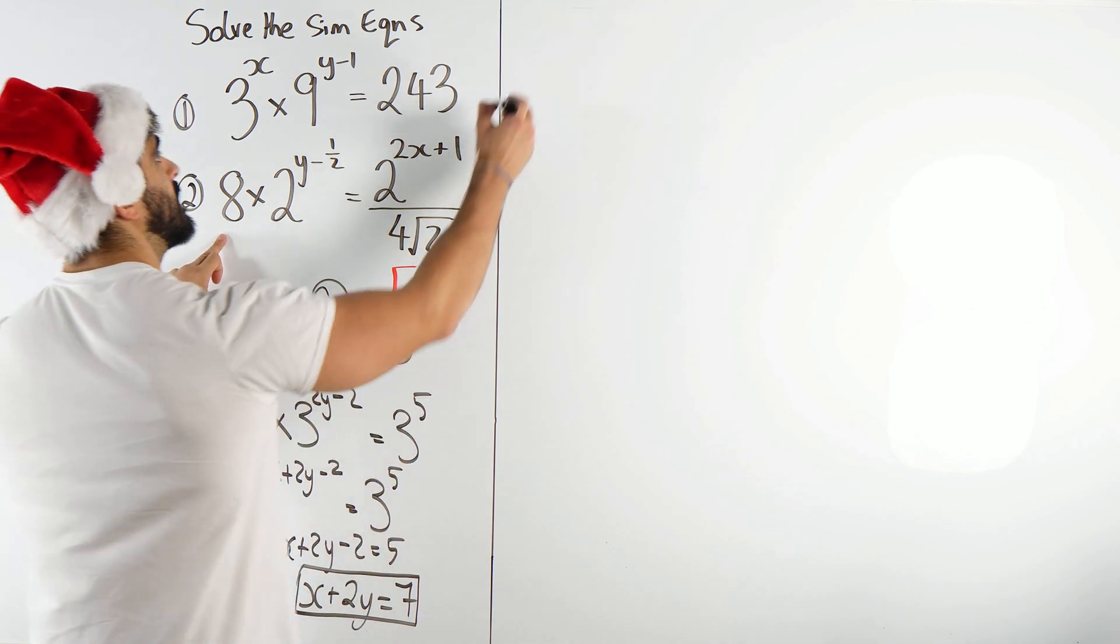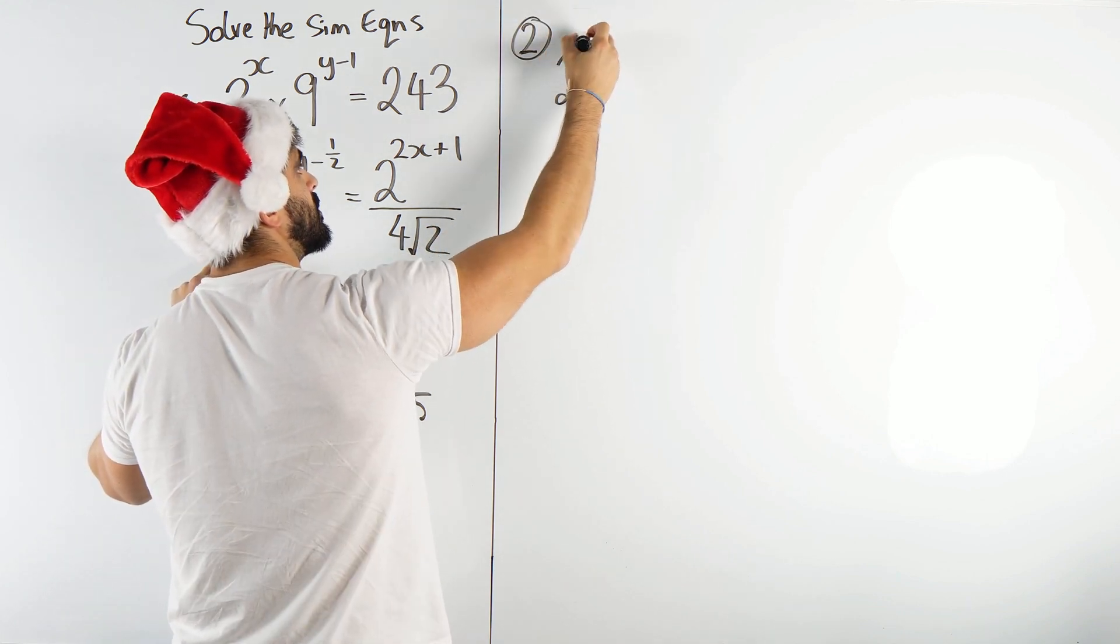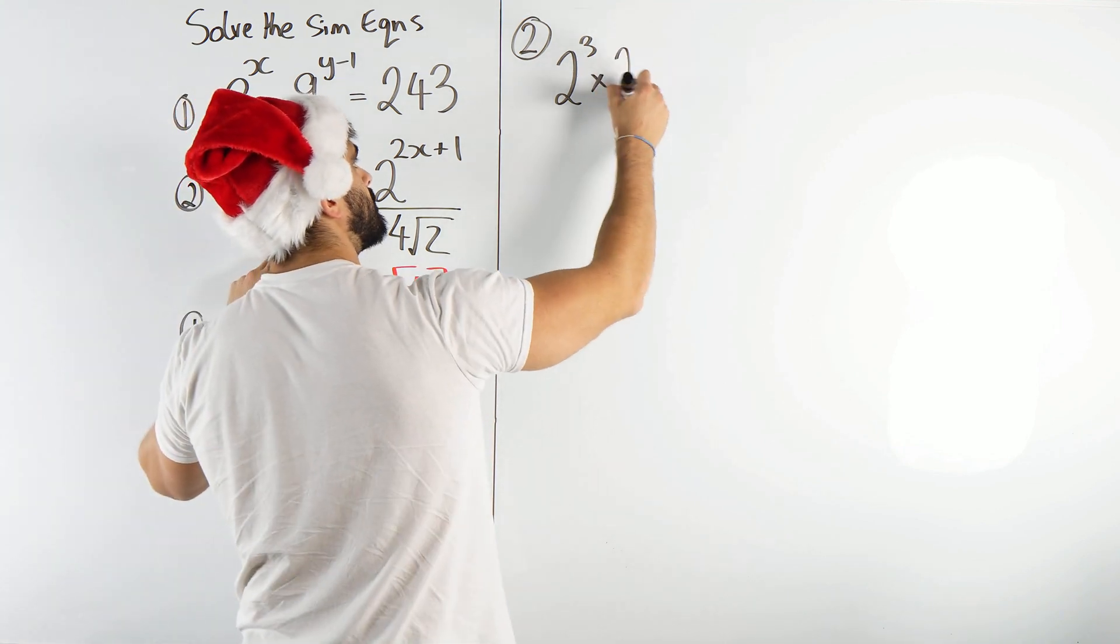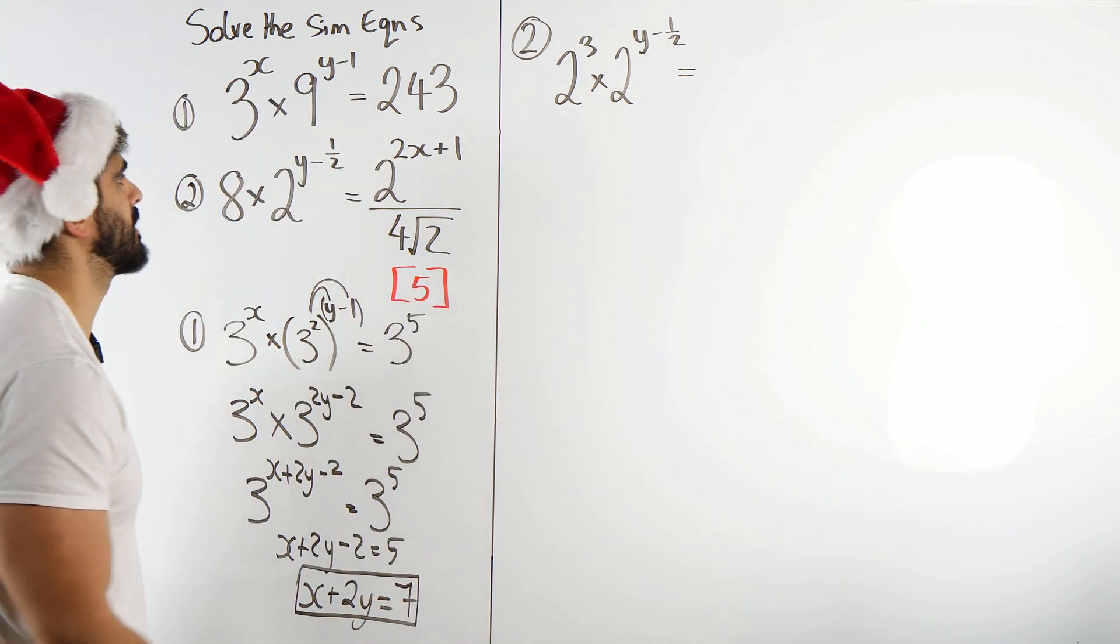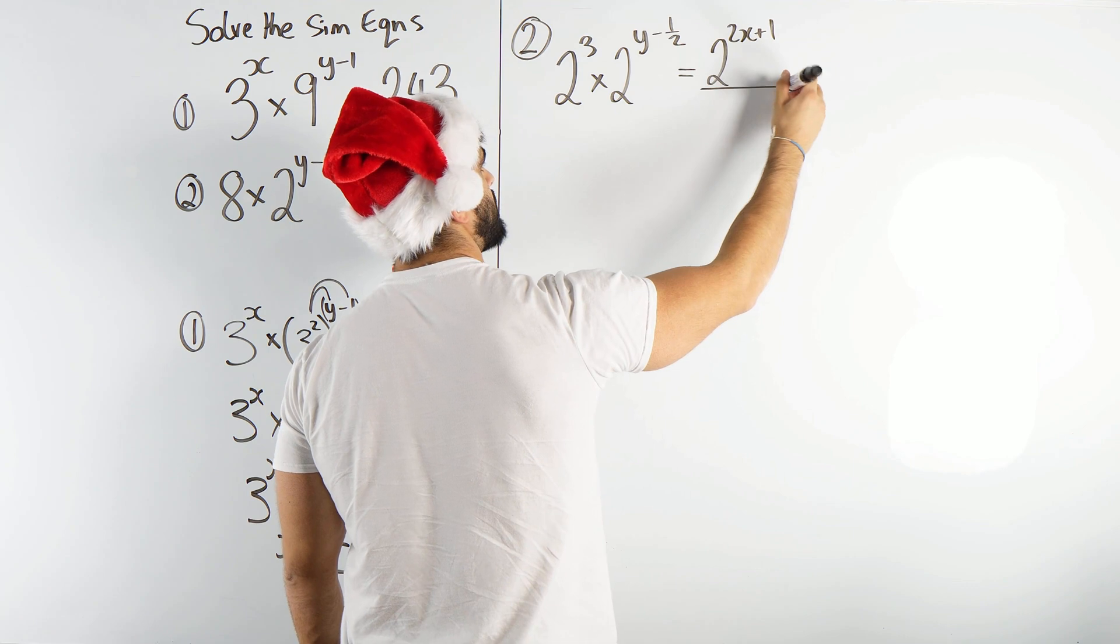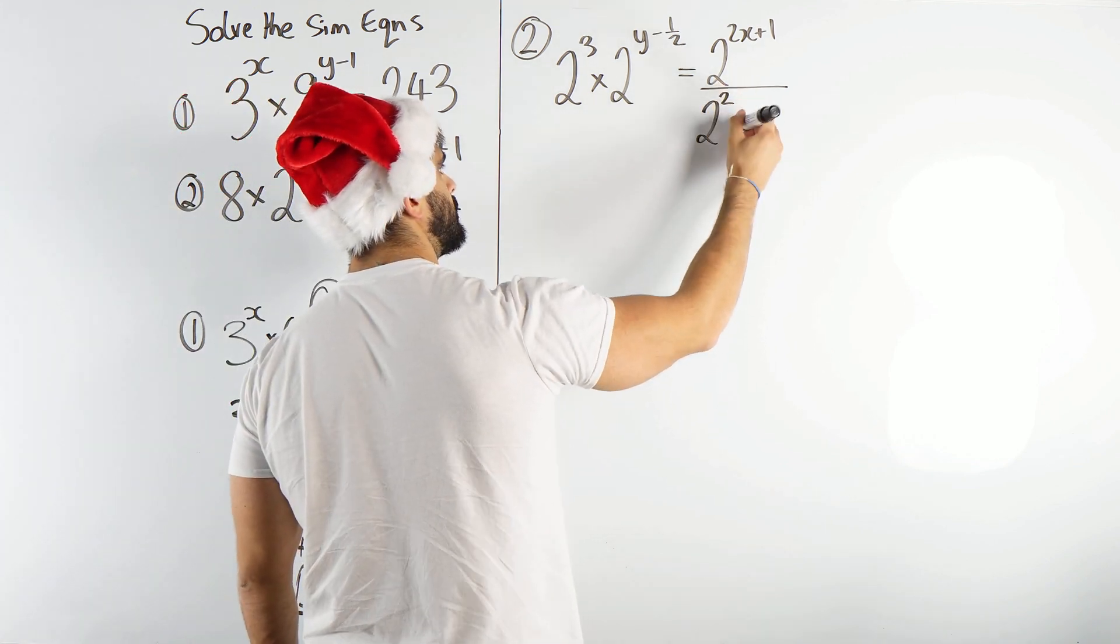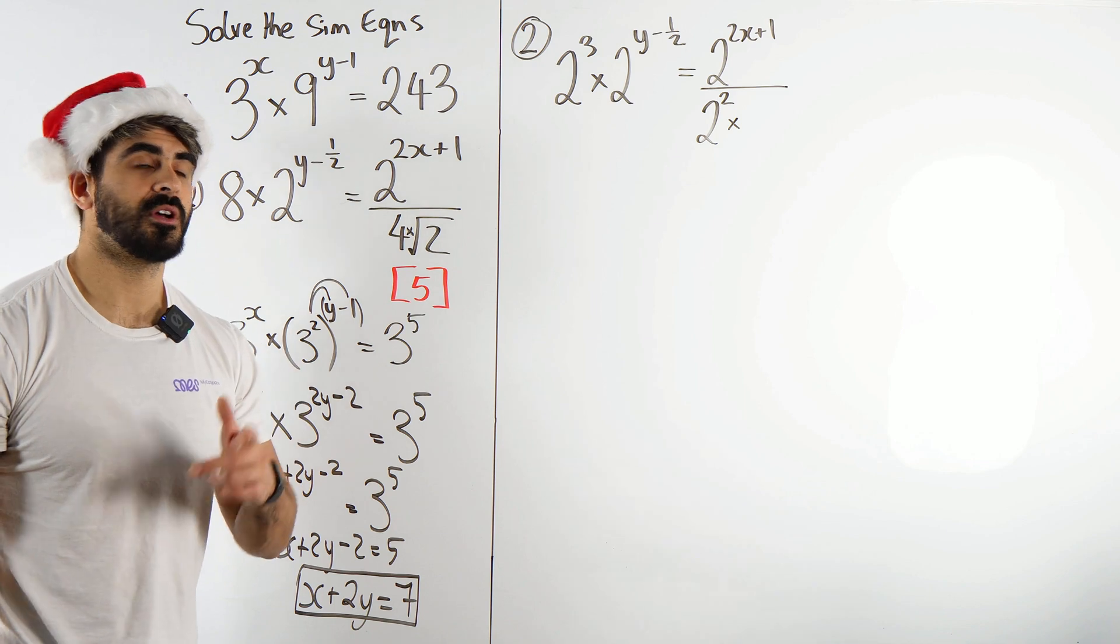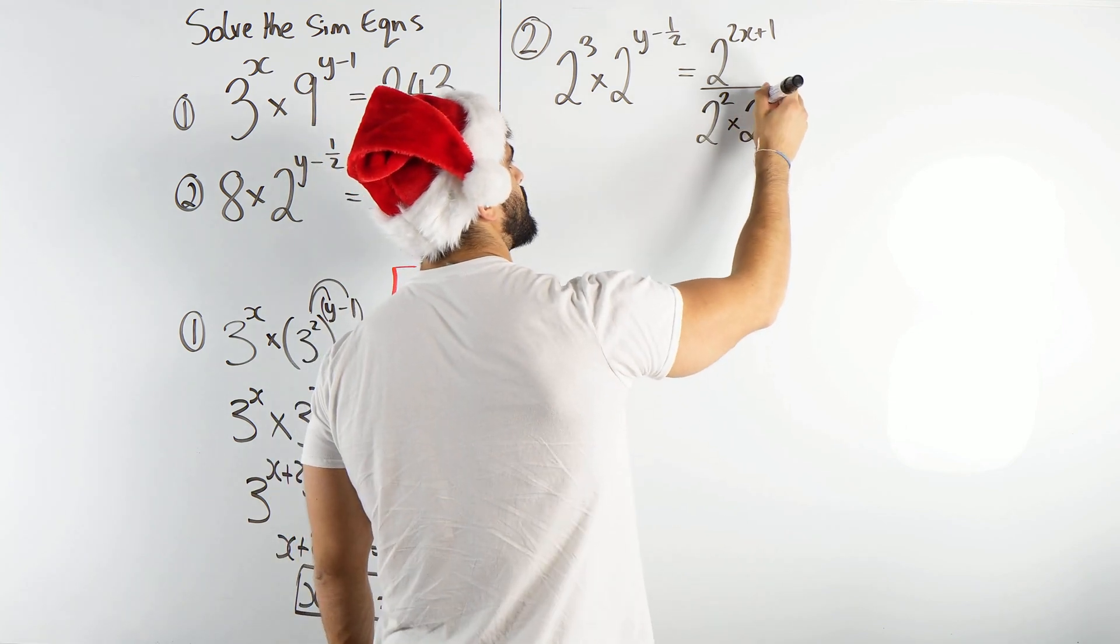Now it's clear that everything can be written as base 2. 8 here is 2, so 8 is 2 cubed. Don't want to stretch too high there. We have just 2 to the power of y minus half, nothing happens there. Equals, here that's another power of 2, nothing happens there. 2 to the power of 2x plus 1. 2 to the power of 2x plus 1 divided by, but now we've got 4, which is 2 squared, times, because remember 4 root 2 is 4 times root 2. Root 2 is 2 to the power of half. That's our index rules. So 2 to the power of a half.